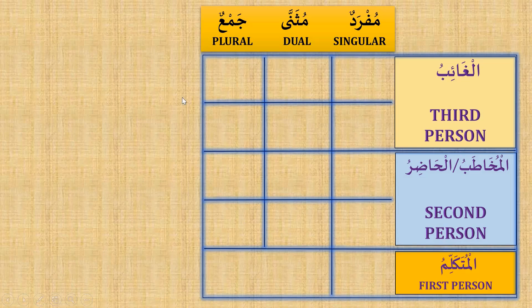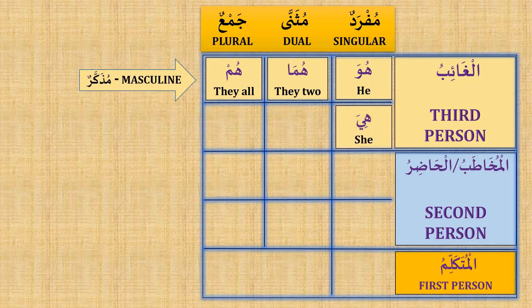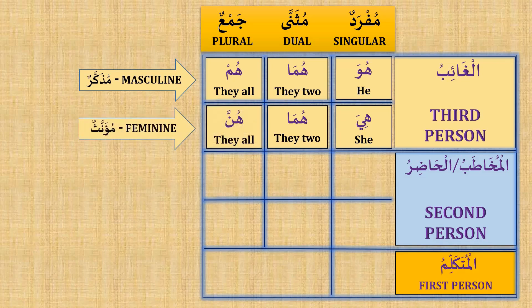Now let's begin. Huwa — he; huma — they two; hum — they all. These are all mudhakkar, masculine. Hiya — she; huma — they two; hunna — they all. These are mu'annath, feminine. These two rows are third person.